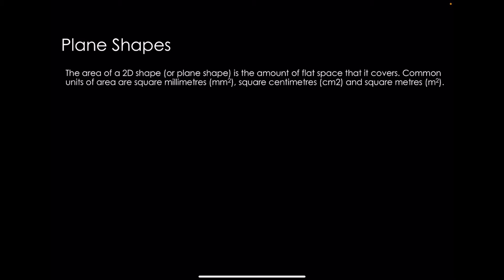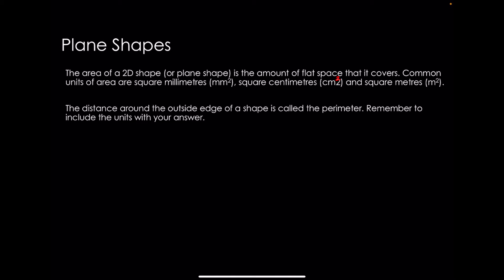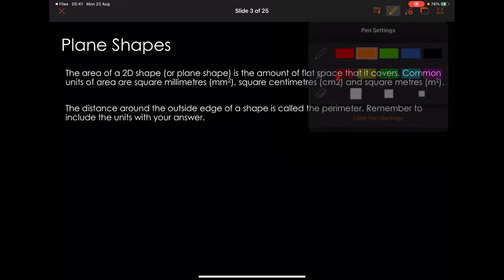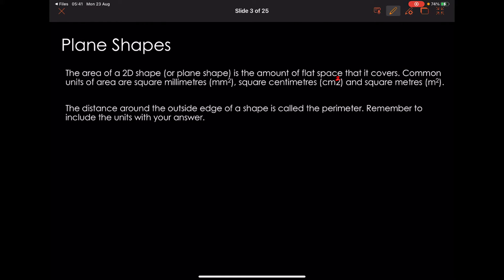First of all, the area of a 2D shape or a plane shape is the amount of flat space that it covers. Common units of area are square millimetres, square centimetres, and square metres. The distance around the outside edge of a shape is called the perimeter. Remember to include the units in your answer — for example, if the question is in centimetres, your answer will be in centimetres.